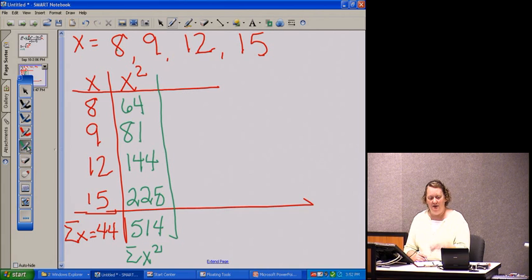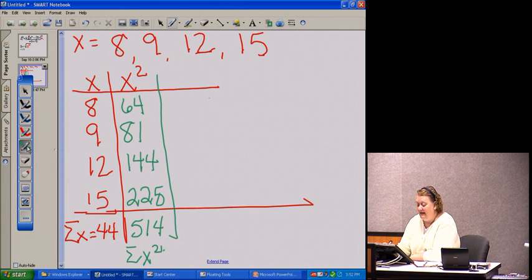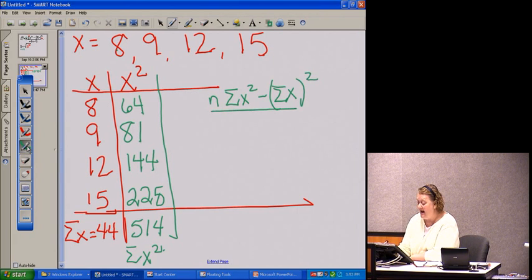Now, you can stop and pause the video because you are watching this as a podcast or a video on QuickTime. So you can hit pause and you can take your calculator and you can add these numbers up. Now, remember what our formula says. We want to take n times the sum of x squared minus the sum of x squared and divide that all by n times n minus 1.